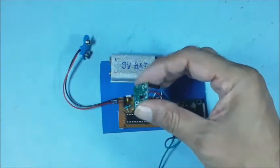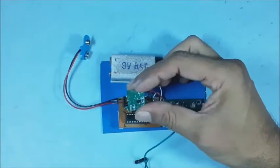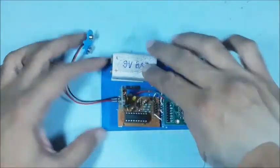Then, insert the RF transmitter module in its slot carefully. Connect an antenna wire for more transmission distance.